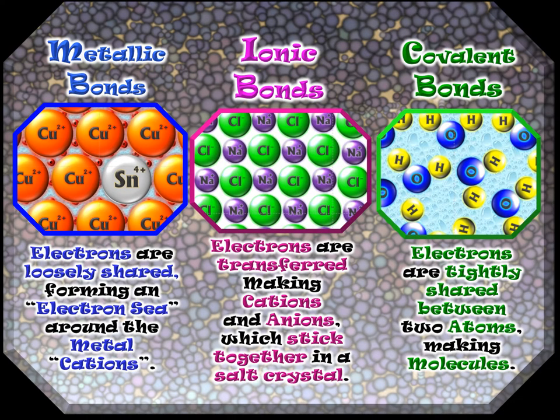Here's my simple breakdown of the three kinds of bonds. Metallic bonds: electrons are loosely shared, forming an electron sea around the metal cations — those terms are in quotes because they're constructs. Ionic bonds: electrons are transferred, making cations and anions which stick together due to opposite charges, forming a salt crystal like sodium chloride. Covalent bonds: electrons are tightly shared between two atoms, making molecules — or also polyatomic ions. Metallic bonds don't make molecules, so don't call them that when you only have metals.